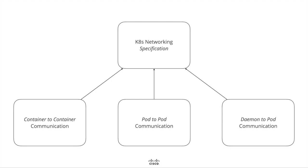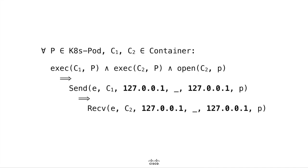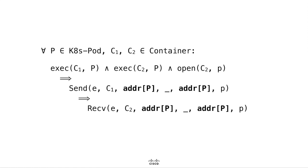The Kubernetes network specification addresses three different concerns: container-to-container communication, pod-to-pod communication, and daemon-to-pod communication. The specification requires that a container C1 executing in the context of a pod P can communicate with any other container C2 also executing in the context of P via localhost or via the IP address of P.